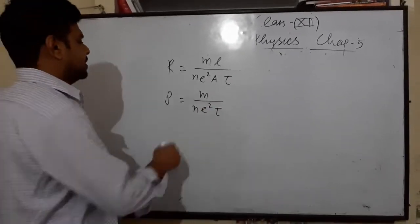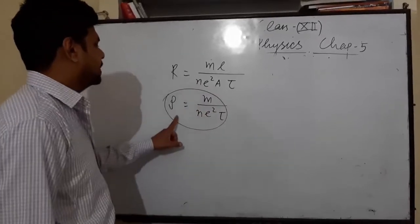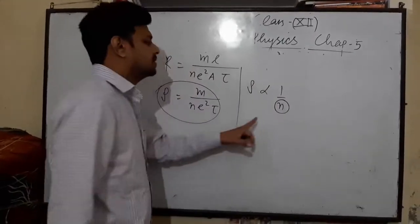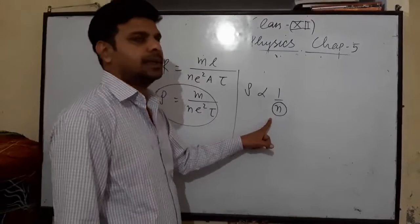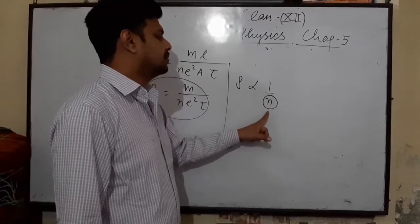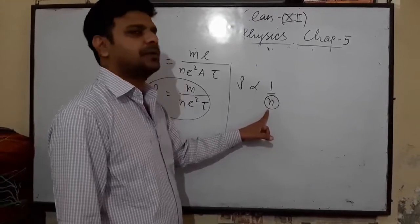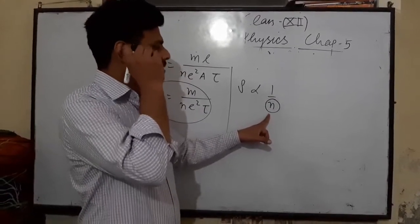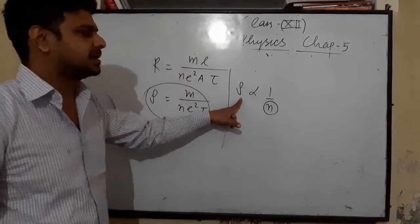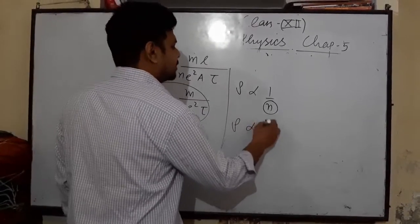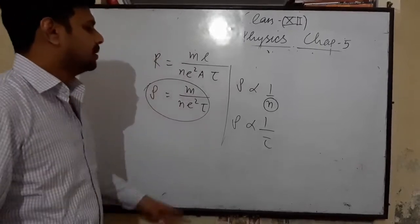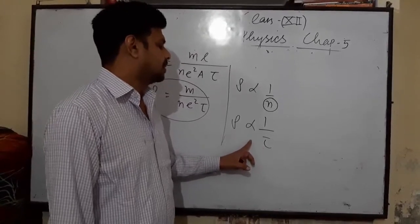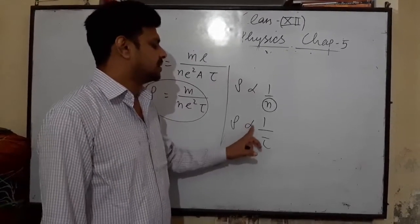As we see, resistivity is inversely proportional to N, the electron density, which tells about the nature of the metal. Electron density is the number of free electrons per unit volume. If a metal has higher electron density, it has low resistivity. Resistivity is also inversely proportional to tau (τ), the mean relaxation time.